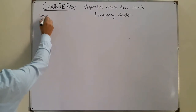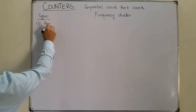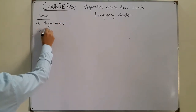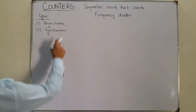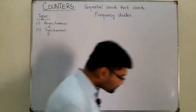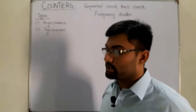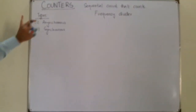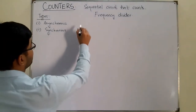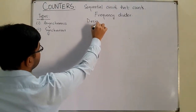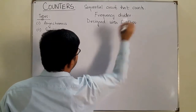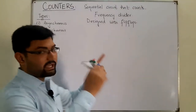There are two major types of counters: number one is asynchronous, and the second one is synchronous. We design counters with the help of flip-flops, which we have seen before.